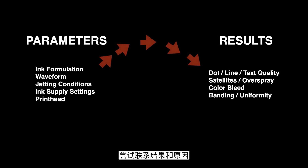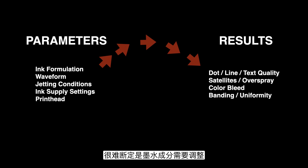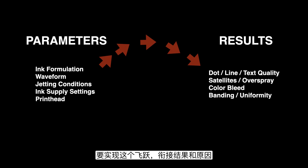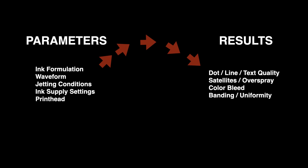The results we're looking for are the quality of the resulting print — dots, lines, and text: are they in the right position, are they focused, are they crisp and easy to read, satellites, color bleed, things like that. The problem is that in practice it's a really big jump to connect these two things. It takes a lot of knowledge and experience to look at a print with poor line quality and know whether the ink needs to change, the waveform is wrong, or the ink supply has too much pressure.